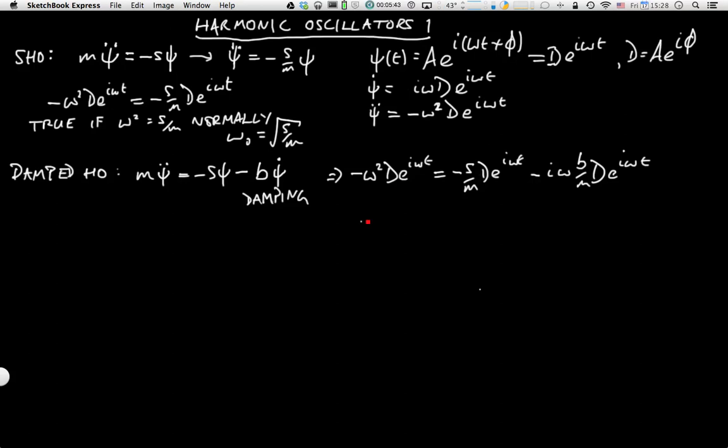We find the following equation: ω² minus iω b over m minus s over m equals zero to satisfy the equation, to satisfy the condition of the equation above.